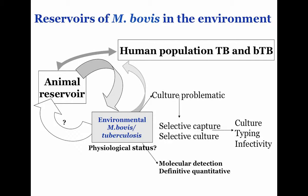Mycobacteria forms two groups within the genus: slow growers and fast growers. Slow growers are mostly pathogenic — not all of them, but that's where the pathogens are. The slow growers have a number of diagnostic attributes, one of which is an insertion sequence in a 16S signature gene, which is handy.